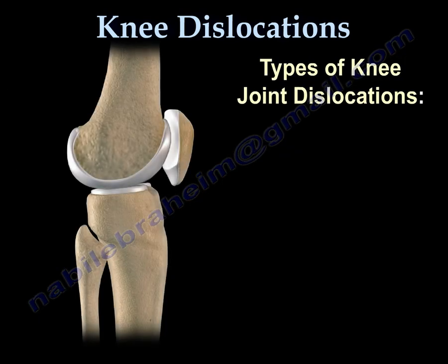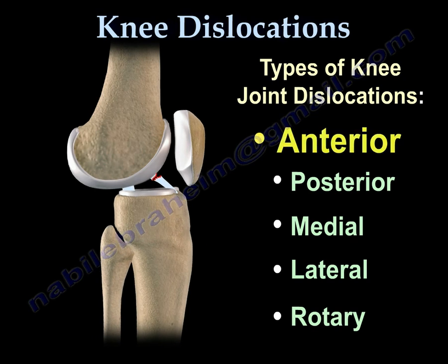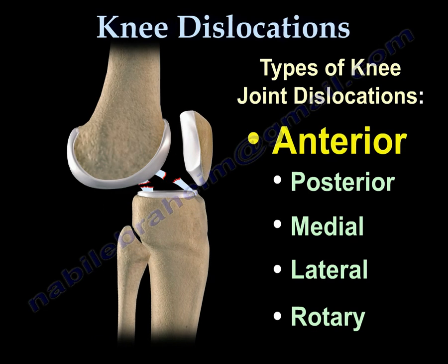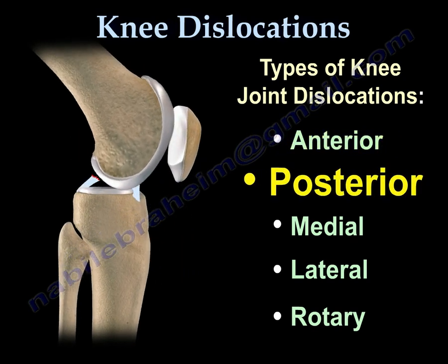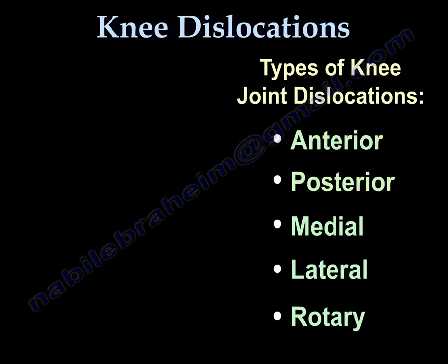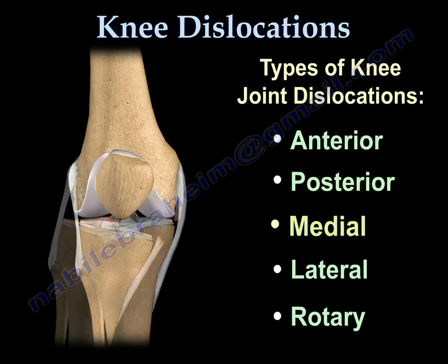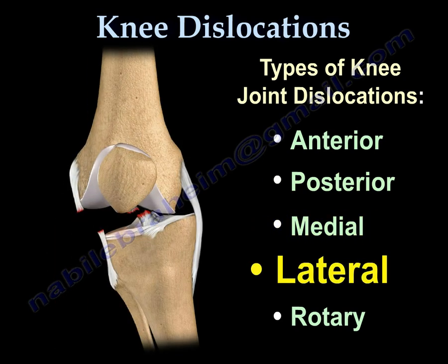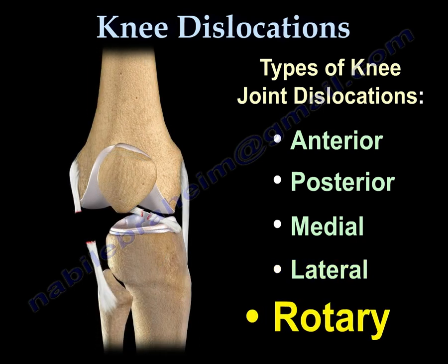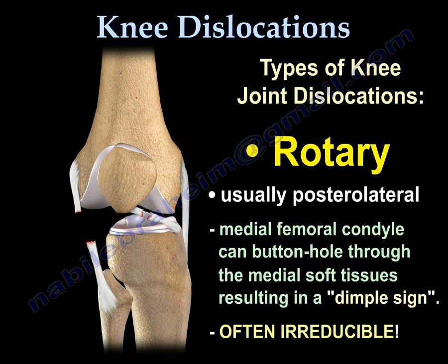Types of knee dislocations: Anterior, Posterior, Medial, Lateral, and Rotatory. Rotatory dislocation is usually posterolateral. The medial femoral condyle will buttonhole through the medial soft tissue and capsule.